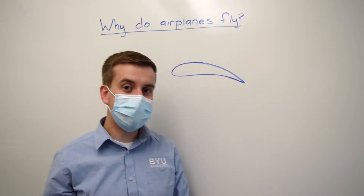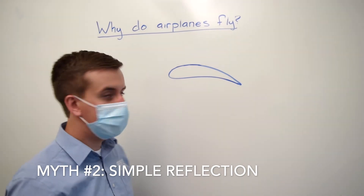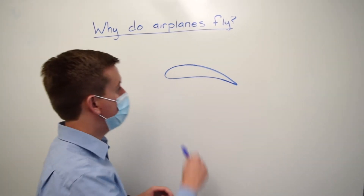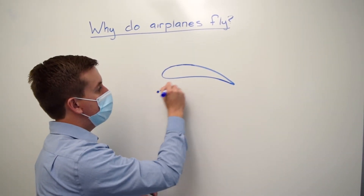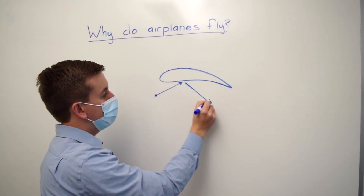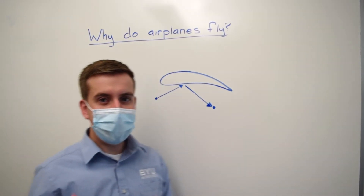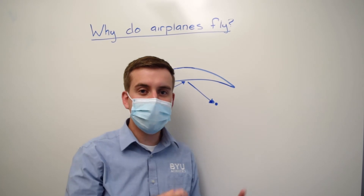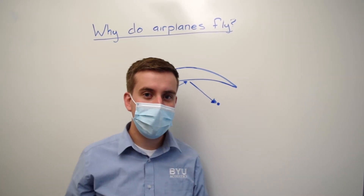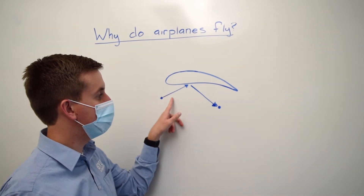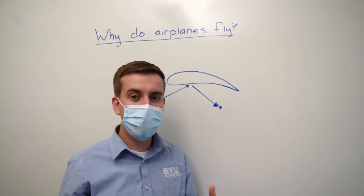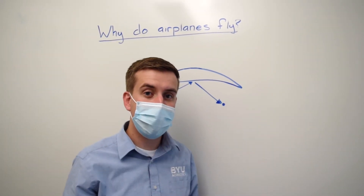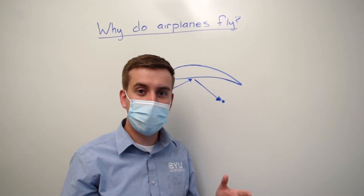Now we're going to talk about the Simple Reflection Theory. This says we are going to hit the air really hard with our wing. Air comes in, hits the wing, and bounces off. As you know from physics, if you hit something, that thing hits you back. So if our wing hits the air, the air is going to push the wing up. If our wing throws the air — bounces the air down — then that air is going to, in turn, bounce the wing up.